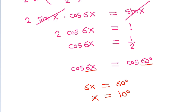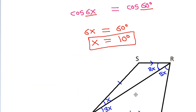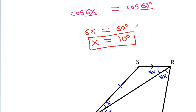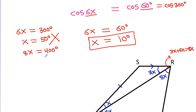So cos 6x equals 1/2, which equals cos 60 degrees. Therefore 6x equals 60 degrees and x equals 10 degrees. It could also equal cos 300 degrees, giving 6x equals 300 degrees and x equals 50 degrees, but that is not possible because the angle 3x plus 5x equals 8x would be 400 degrees, which is too large.